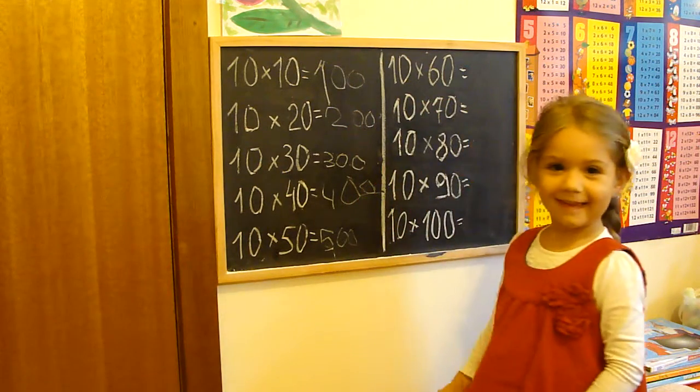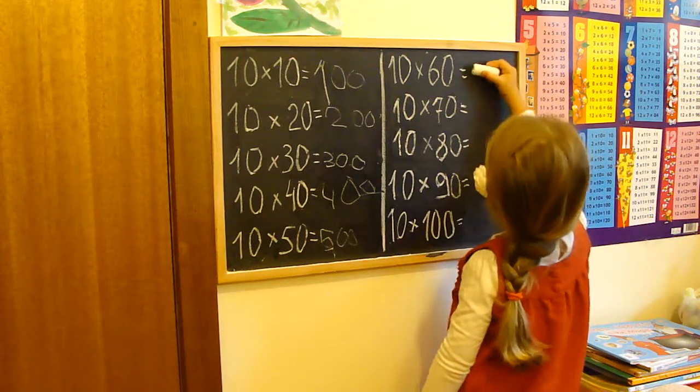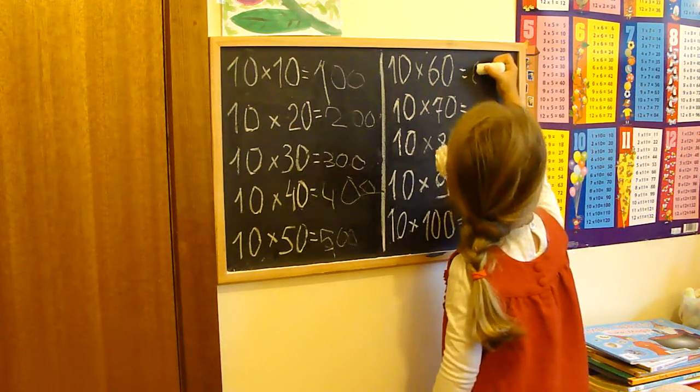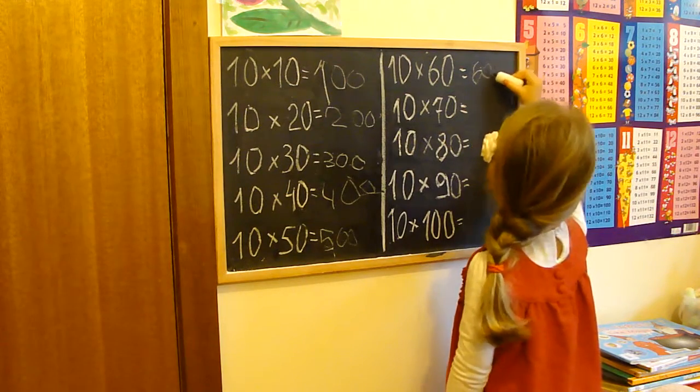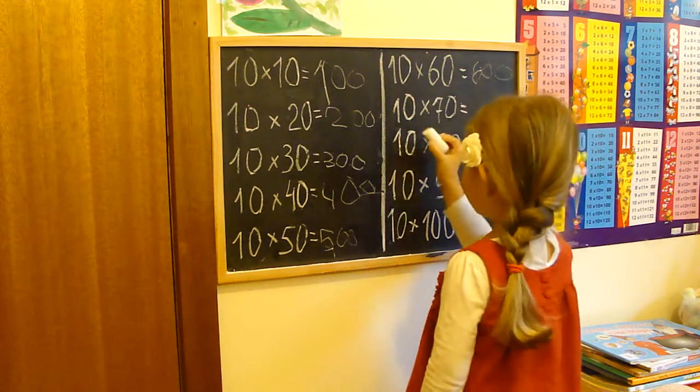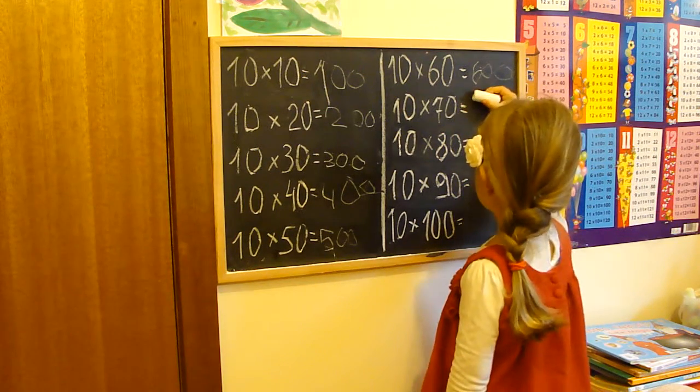Next one. 10 times 60 is 600. Very good. 10 times 70 is 700. That's right.